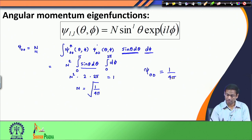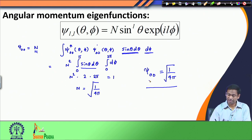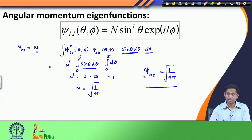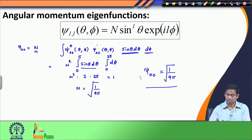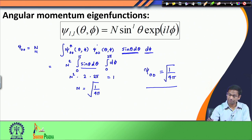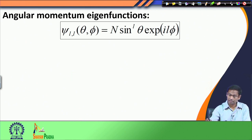Therefore psi_00 is 1 over the square root of 4pi. Please note that this eigenfunction is independent of theta and independent of phi — there is no angular dependence on this function. We will come back to this property when we define some observable corresponding to this function. Now we will take L equals 1.